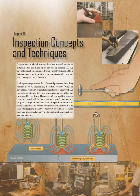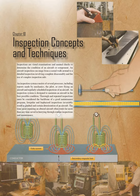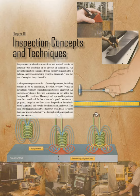Chapter 10: Inspection Concepts and Techniques. Inspections are visual examinations and manual checks to determine the condition of an aircraft or component. An aircraft inspection can range from a casual walk-around to a detailed inspection involving complete disassembly and the use of complex inspection aids. An inspection system consists of several processes, including reports made by mechanics, the pilot, or crew flying an aircraft, and regularly scheduled inspections.